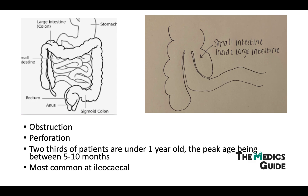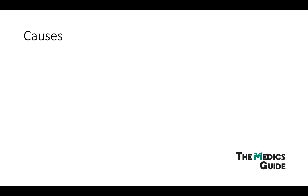Now let's go into why this happens. During peristalsis, the wave-like motion of the intestine can catch on what we call a lead point, causing that part of the bowel to telescope. These lead points can be a number of different things, which we can split into two main categories: non-pathological, which is the majority, and pathological.